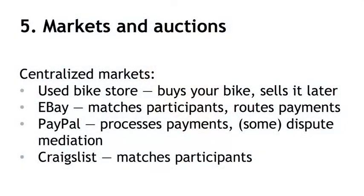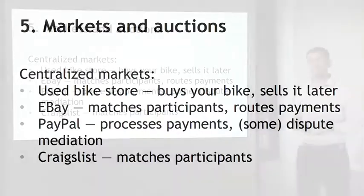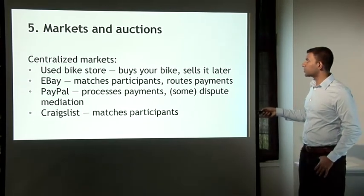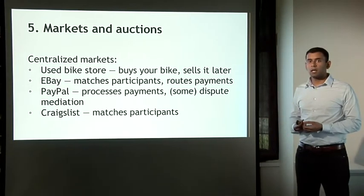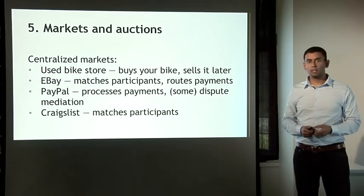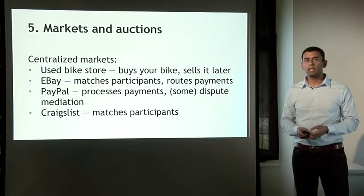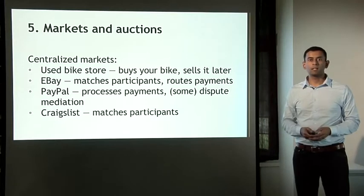The next one is decentralized markets, still in the proposal stage but with a lot of excitement. Let's talk about markets and auctions and look at real-world examples to understand what features they provide. A used bike store is one model: you sell your bike to the store, and they have a separate transaction reselling it — you don't interact directly with the person who eventually rides away with your bike.